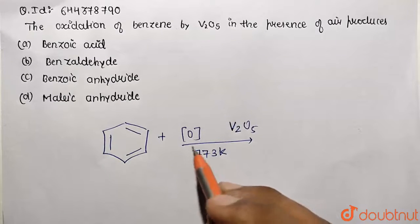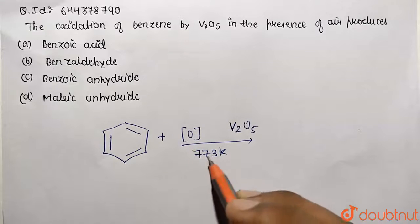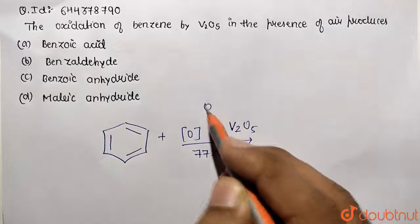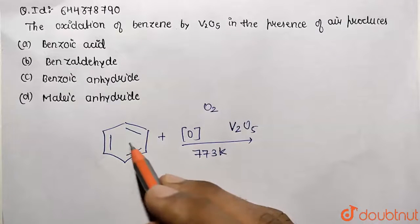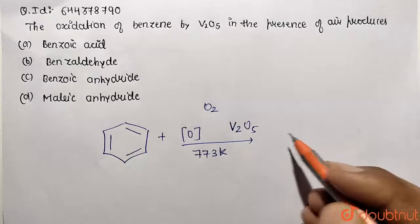And what happened when this oxidation process is taking place? You can write nascent oxygen or you can write O2 like this. And this cleavage of the bonds will take place, and correspondingly we are going to get the product of maleic acid first.